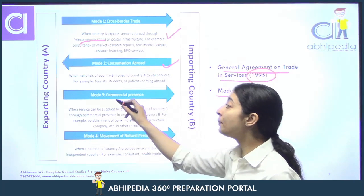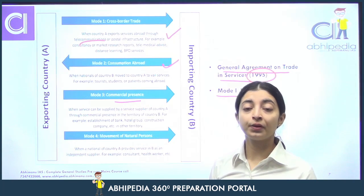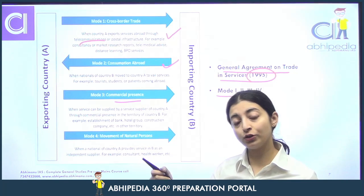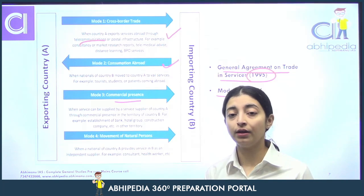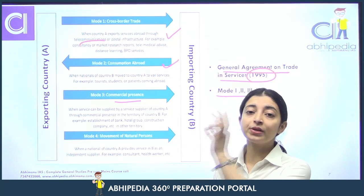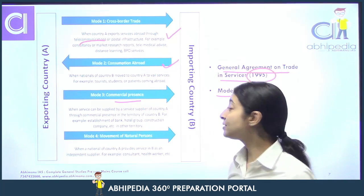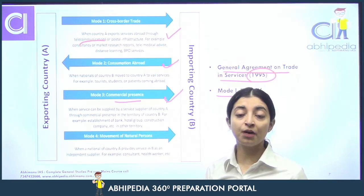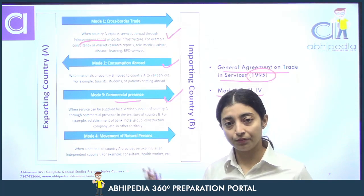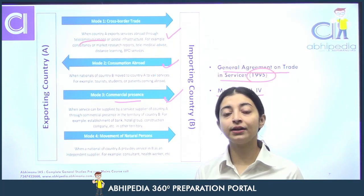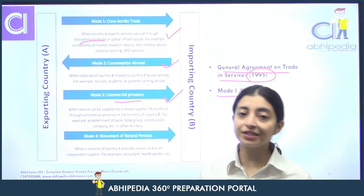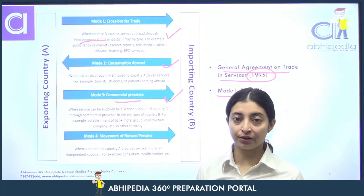Commercial presence is mode 3. Ab wo jo doctor tha na, usne apna hospital — wo US wale doctor ne apna hospital India mein khol liya, apni ek branch India mein hi khol li. That is ki usne apni commercial presence banayi India mein bhi. That is trade under mode 3 — commercial presence abroad. For example, bank ki branch khul gayi, koi university ki branch khul gayi — any such thing.